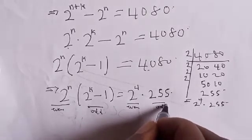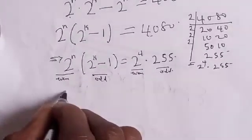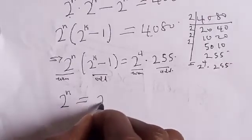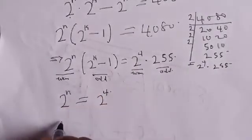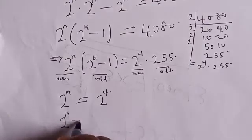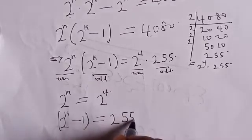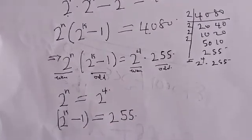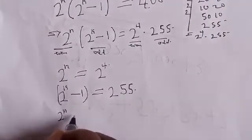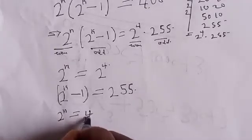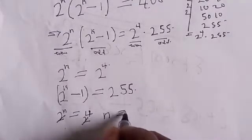Since the left side is even and the right side has an even part and an odd part, we can equate: 2 raised to power n equals 2 raised to power 4. Since the bases are the same, n is equal to 4. Also, 2 raised to power k minus 1 is equal to 255.